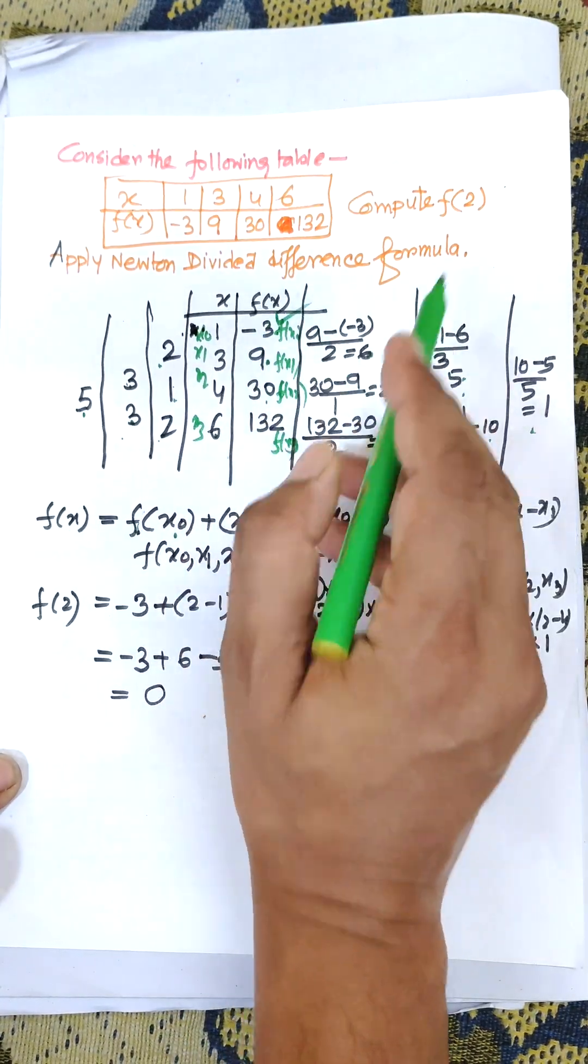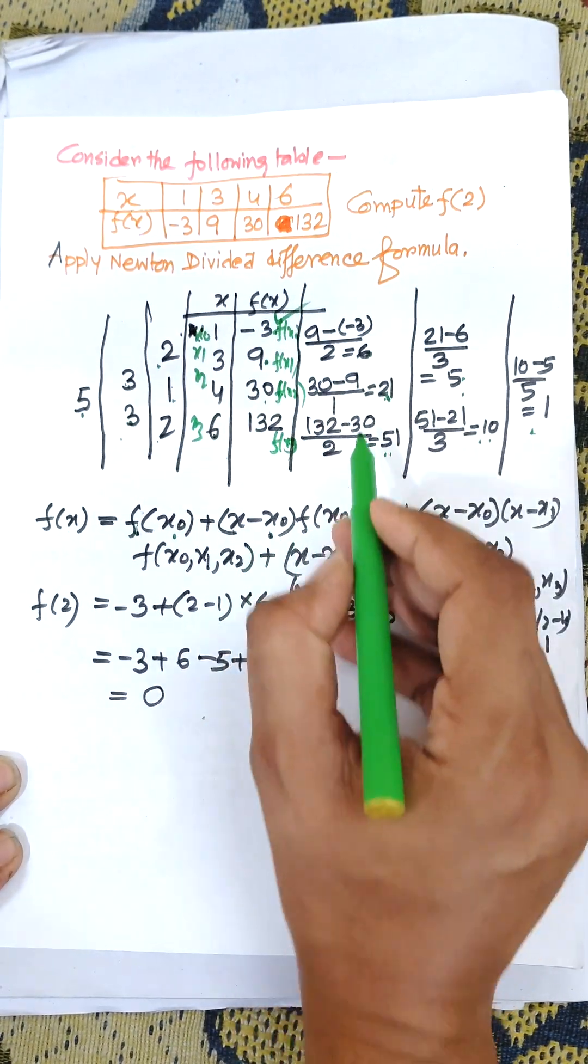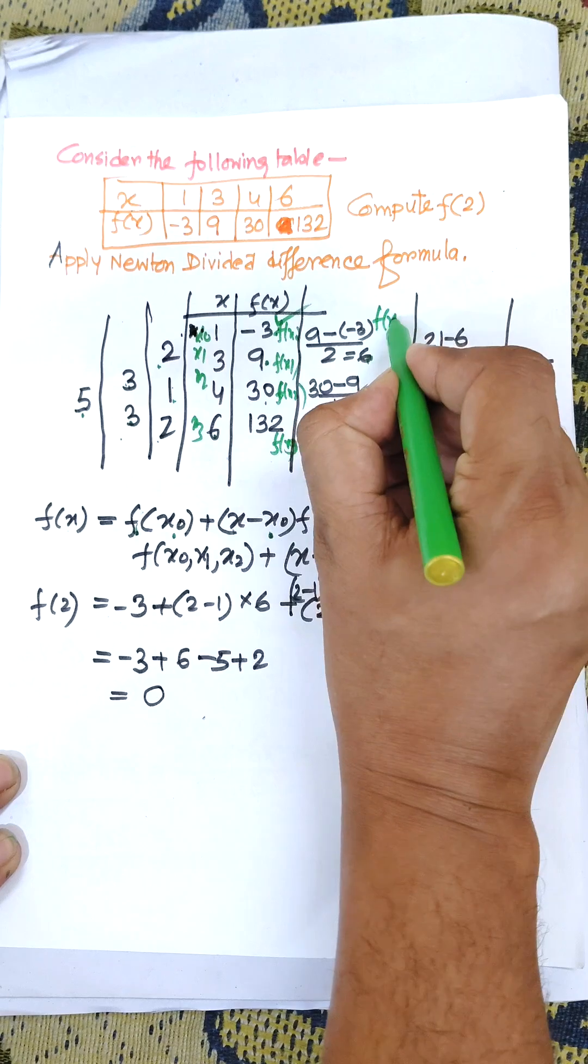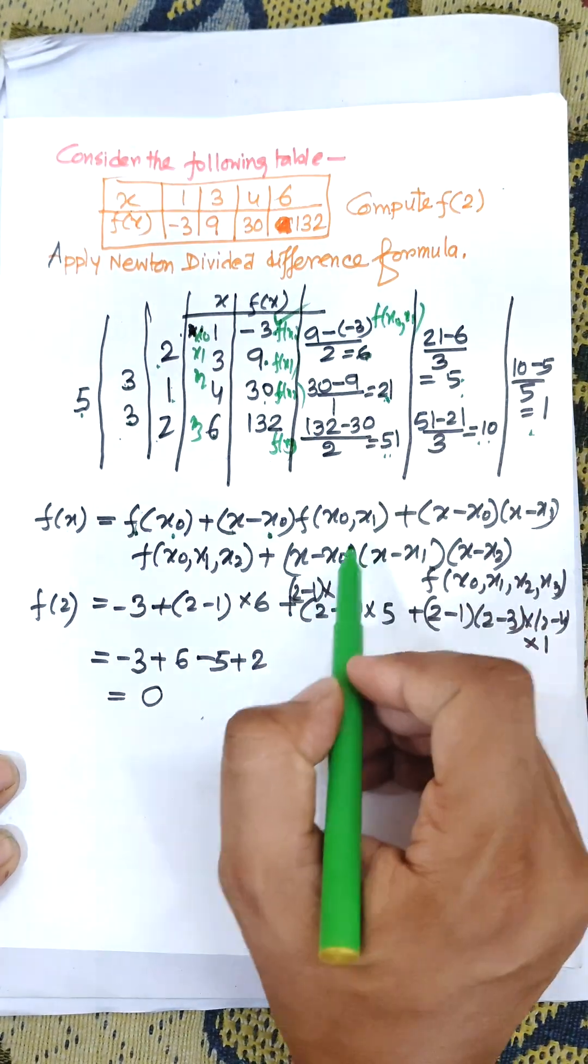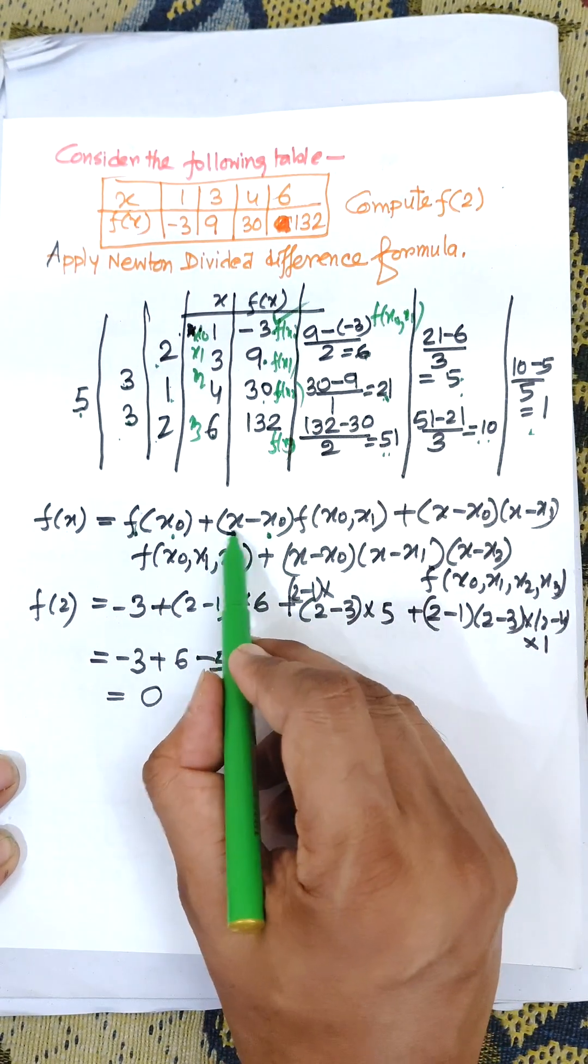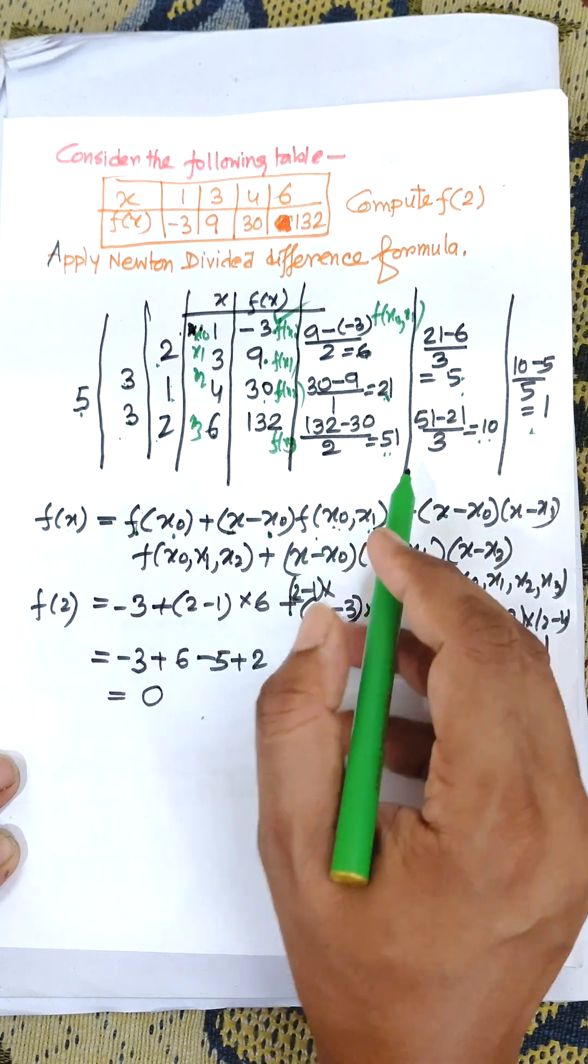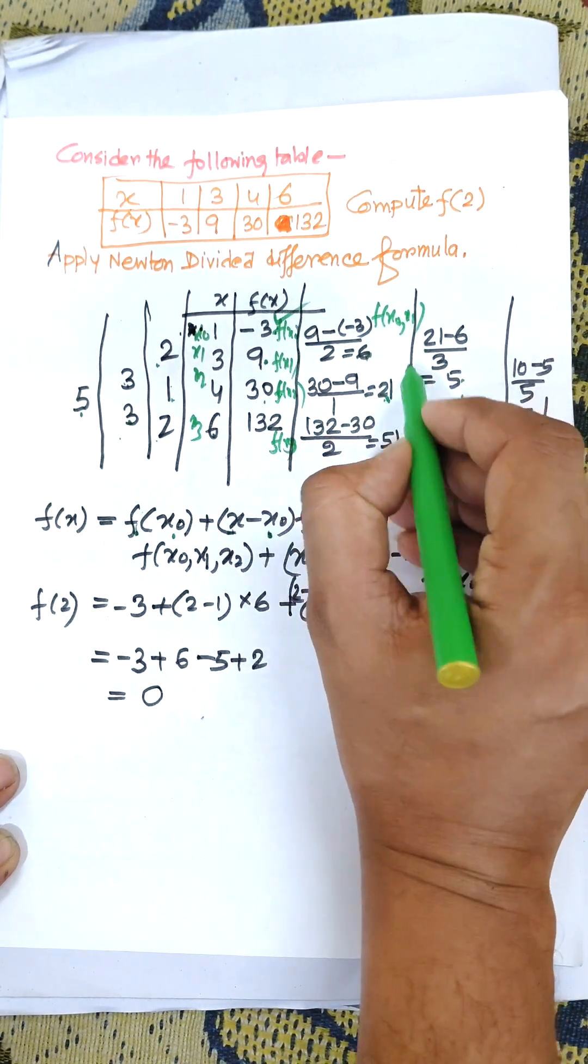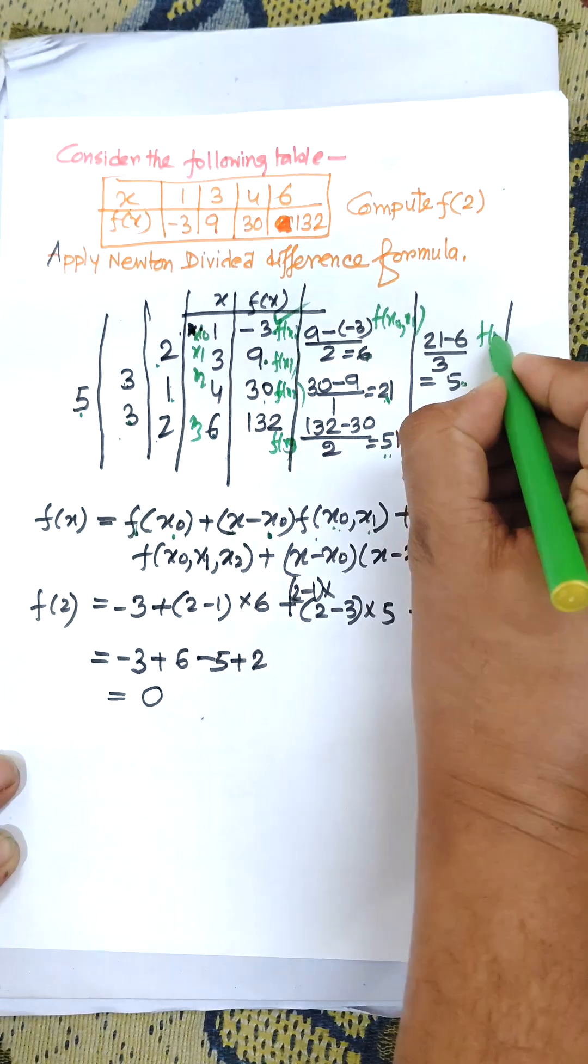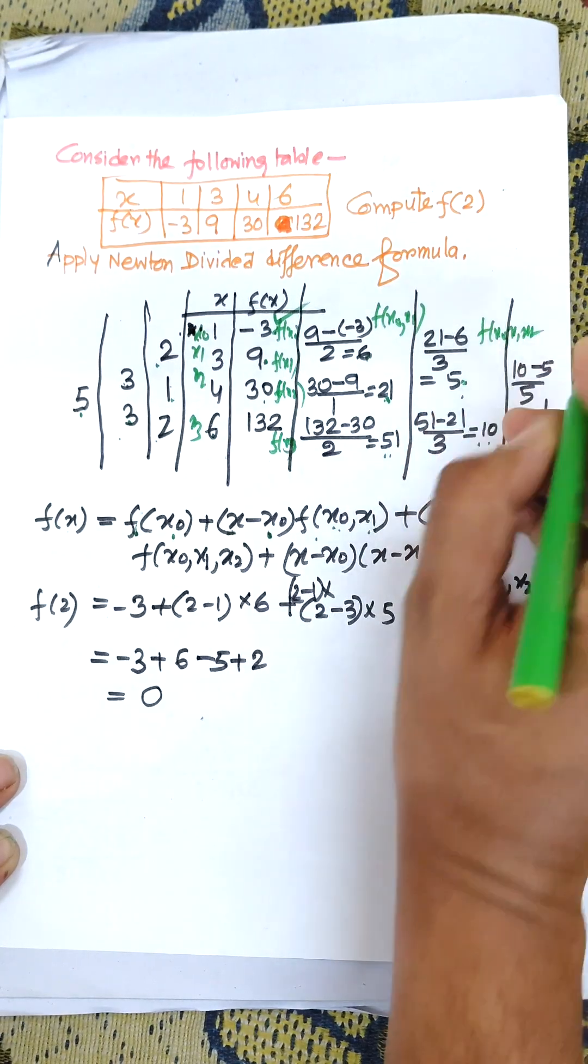f(x0) is the first value, then x minus x0 times this one, which is f(x0, x1) - the combination of x0 and x1 function. The next one is a function of x0, x1, x2.